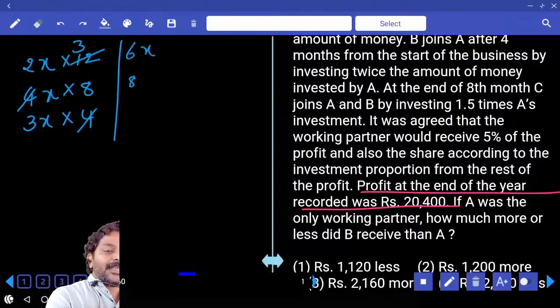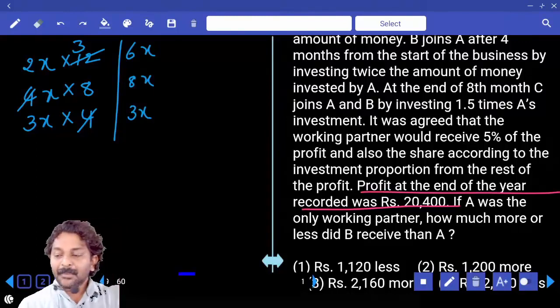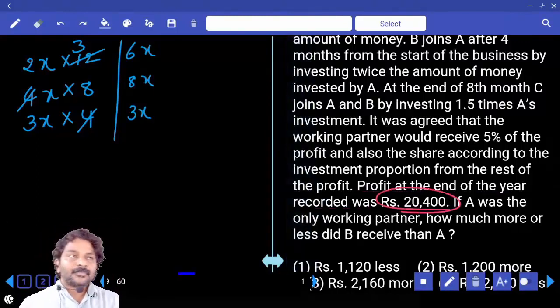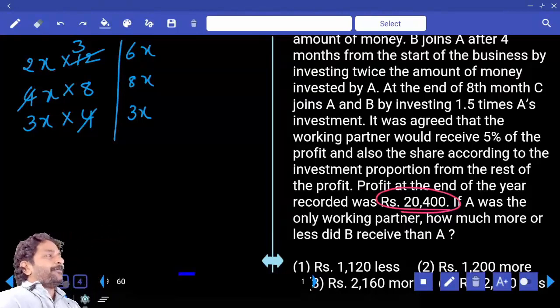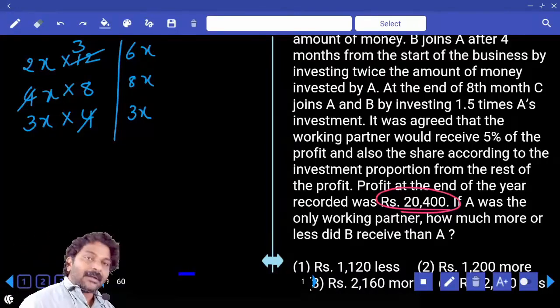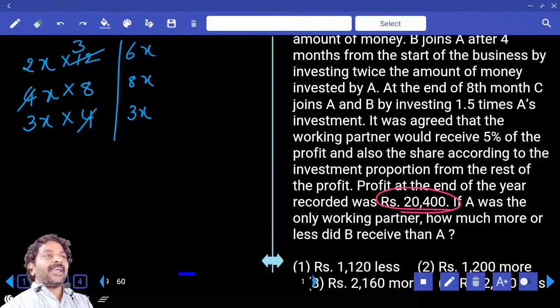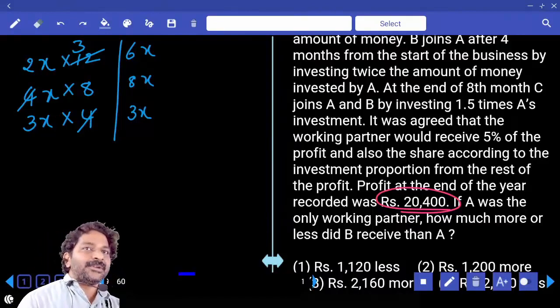2X times 12 is 24X, that's 6X. 4X times 8 is 8X. 3X times 4 is 3X. Correct. How much is total profit? 20,400. In terms of number of parts, how many parts we have? 17. So can we directly divide 20,400 into 17 parts?